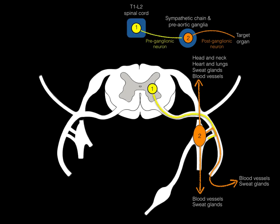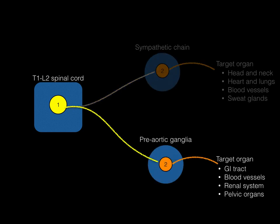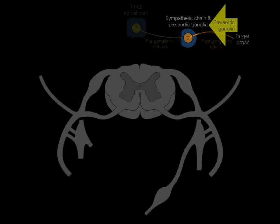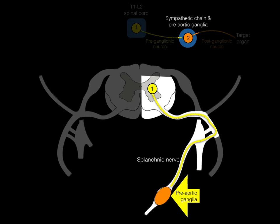Now let's go from the sympathetic chain to the preaortic ganglia. The preganglionic neuron sends an axon out the ventral root, ventral ramus, and white ramus communicans into the sympathetic chain, but it does not synapse there. It continues on through what is called a splanchnic nerve — whenever you see splanchnic, it means related to an organ — and synapses in the preaortic ganglion. From there, it sends a postganglionic neuron out to target organs such as the GI tract, adrenal gland, abdominal blood vessels, the renal system, or pelvic and perineal organs.